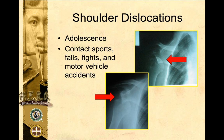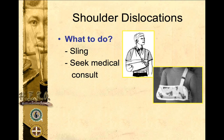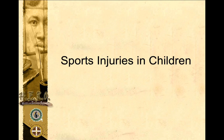Shoulder dislocation is common in adolescence and in contact sports, falls, motorcycle accidents, and fights. From this X-ray picture, shown by the red arrow, the humeral head or shoulder bone is placed below the joint — it's not in congruity with the joint, so it's dislocated. Signs and symptoms include swelling of the shoulder, tenderness, limitation of motion, and a hollow shoulder joint on palpation because the bone is inferiorly and anteriorly displaced. First aid: place the patient in the most comfortable position, apply ice, and seek medical consult.